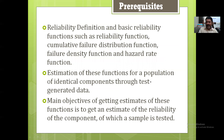Before this chapter, we already discussed the definition of reliability and basic reliability functions like cumulative failure distribution, failure density, and hazard rate functions. We also covered estimation of these functions for a population of identical components using test-generated data. The main objective was to get an estimate of the reliability of the component from which a sample is tested.